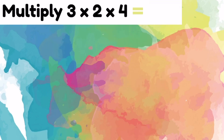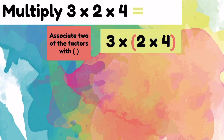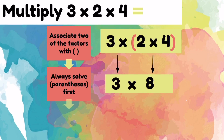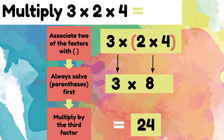3 times 2 times 4. Let's associate 2 of the factors — let's do the 2 times 4 first. Remember, you always solve parentheses first. 2 times 4 equals 8. Let's bring down the 3 times. Let's multiply by the third factor, so we have to multiply 3 times 8, which equals 24. 3 times 2 times 4 equals 24.